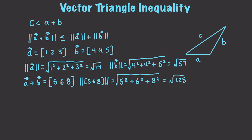And if we went and plugged these into our formula, that would then give us the square root of 125 is less than or equal to the square root of 14 plus the square root of 57, which is going to be approximately 11.18 is less than or equal to 11.29. So we can see that indeed that is true, and then that tells us that these vectors are linearly independent.